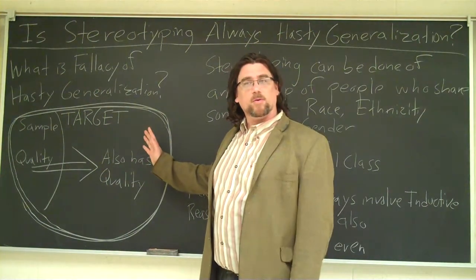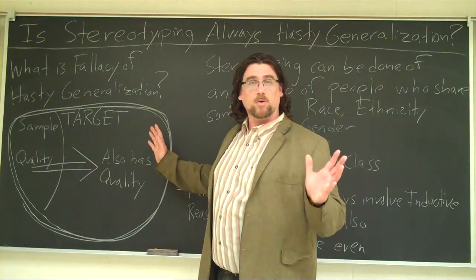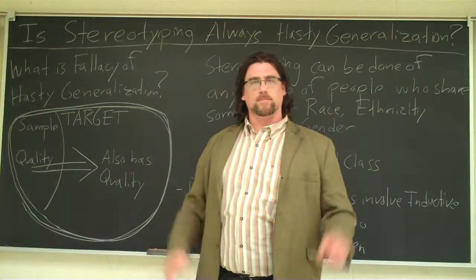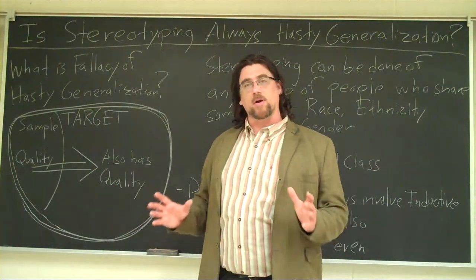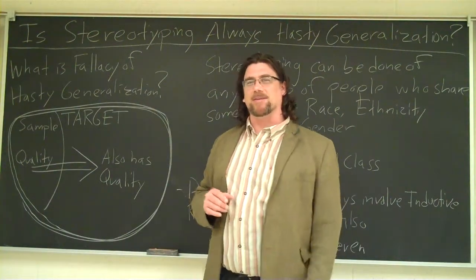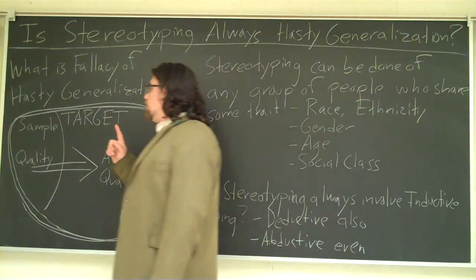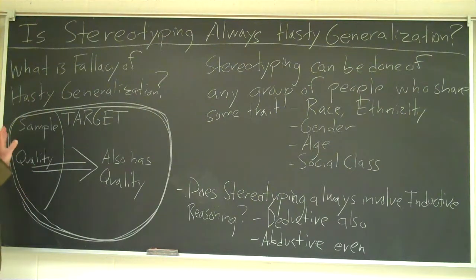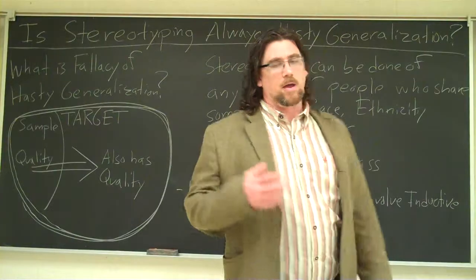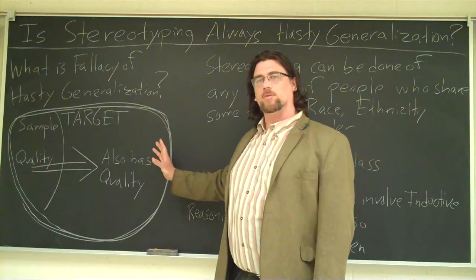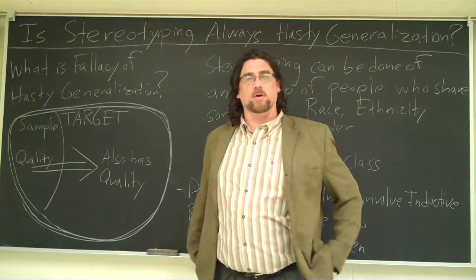There are a few technical terms here. The entire group is what we call the target — we're aiming the argument at it, and it will be part of the conclusion. The sample is what we actually observe, a portion of that group. The sample has some given quality, and we want to say that if the sample has this quality, then it's likely that the group also similarly shares that quality.